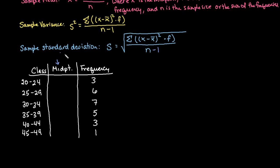The midpoint is the lower class limit plus the upper class limit divided by 2. So for this first one, in order to find the midpoint, I would do 20 plus 24, which is 44, and then I would divide that by 2, which is going to give me 22.